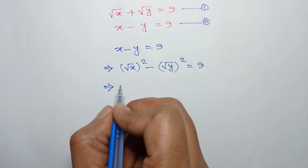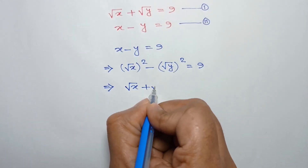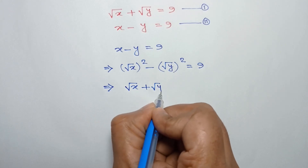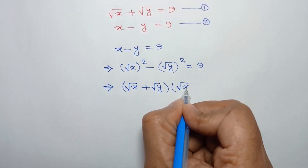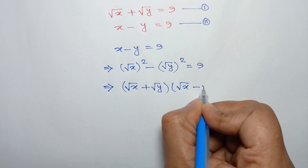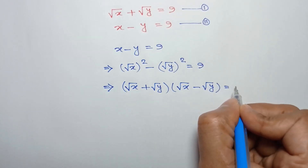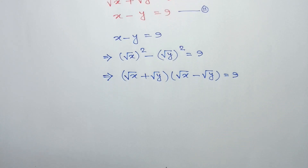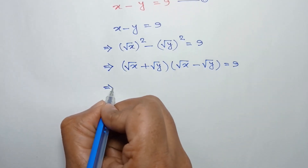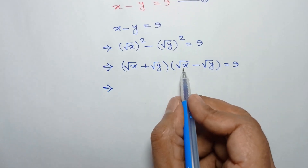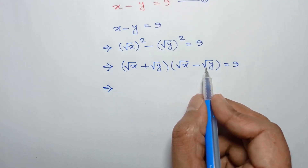Applying the formula a squared minus b squared equals a plus b times a minus b, we can write it as square root of x plus square root of y, times square root of x minus square root of y, is equal to 9.